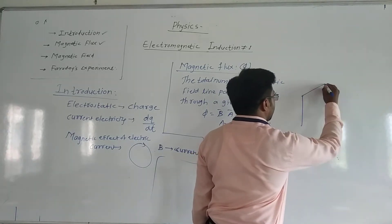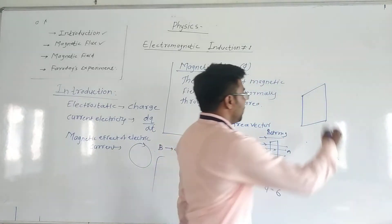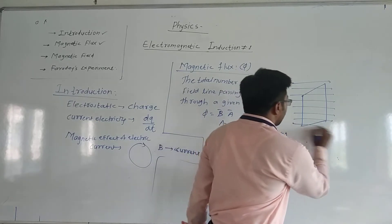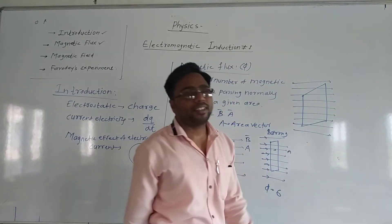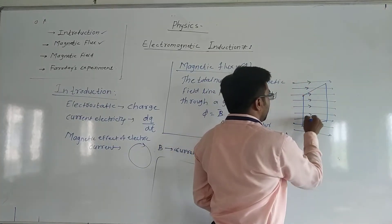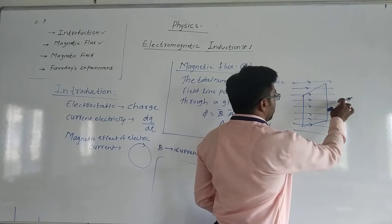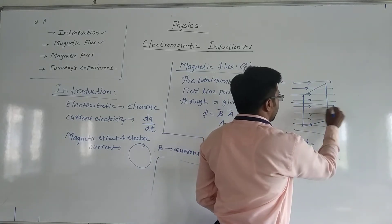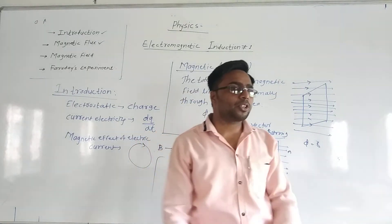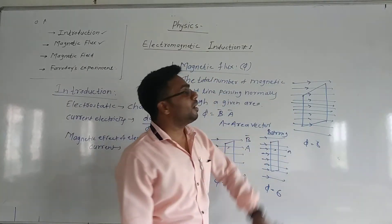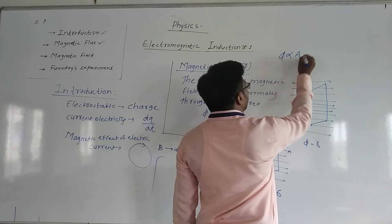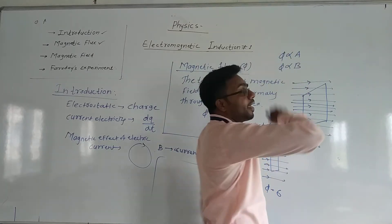If we want to increase the area, we can get all this area increase. When you really have the area increase, you can cut it into two parts, then three parts, and cut the area further. Suppose you can cut the area more — this is the magnetic flux. The magnetic flux is directly proportional to the area and directly proportional to the magnetic field.